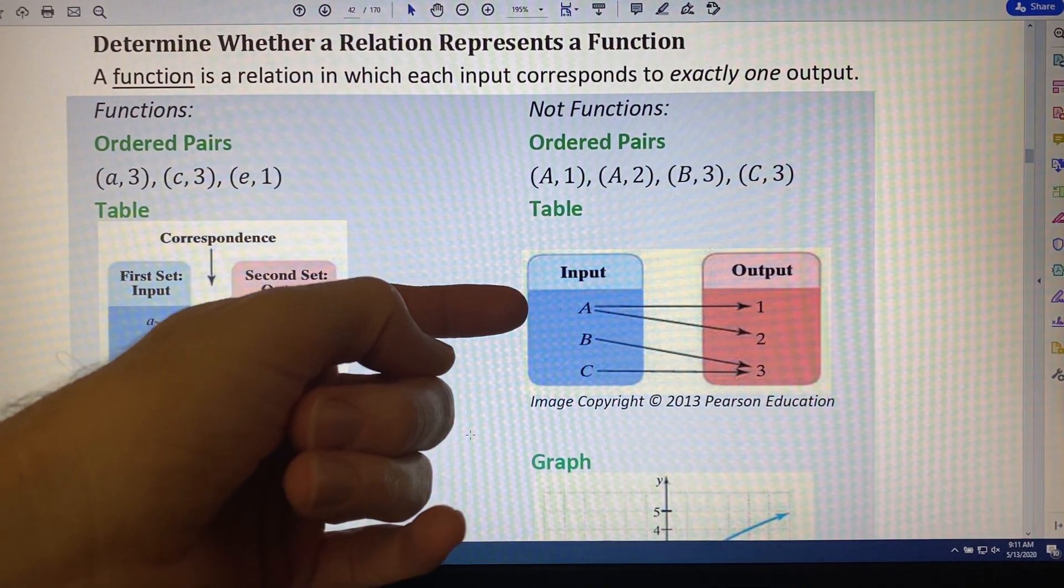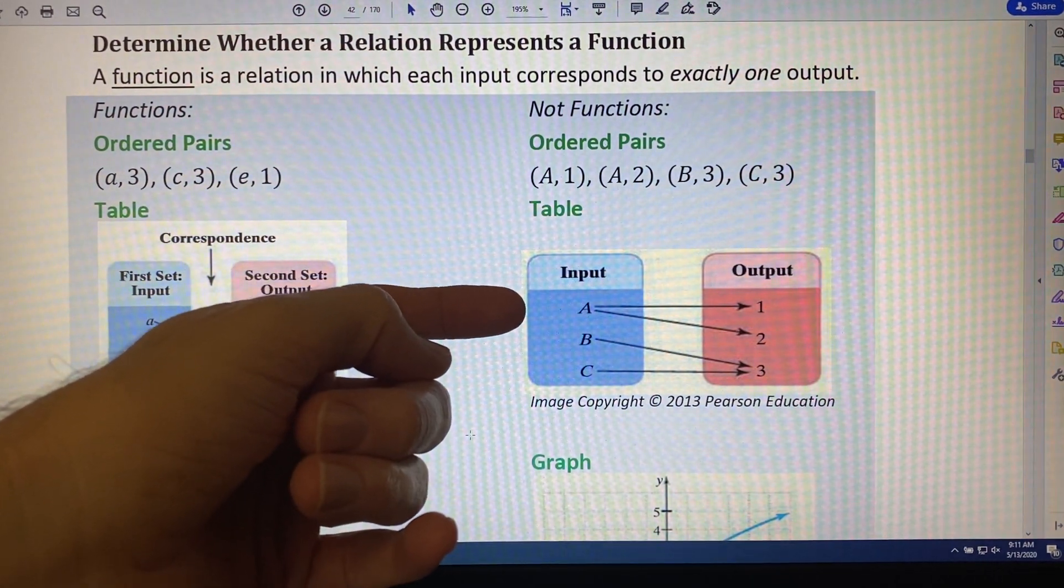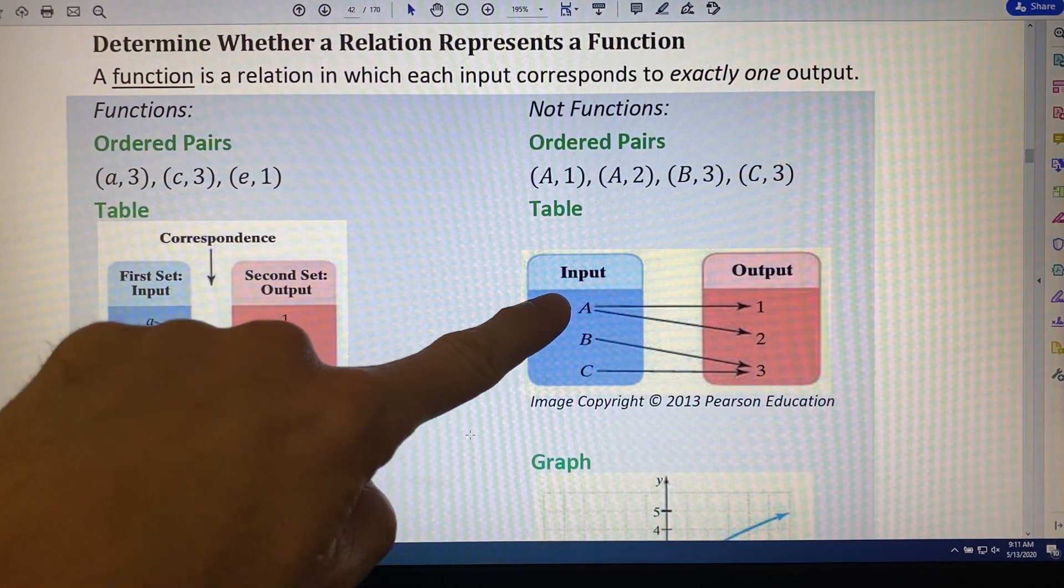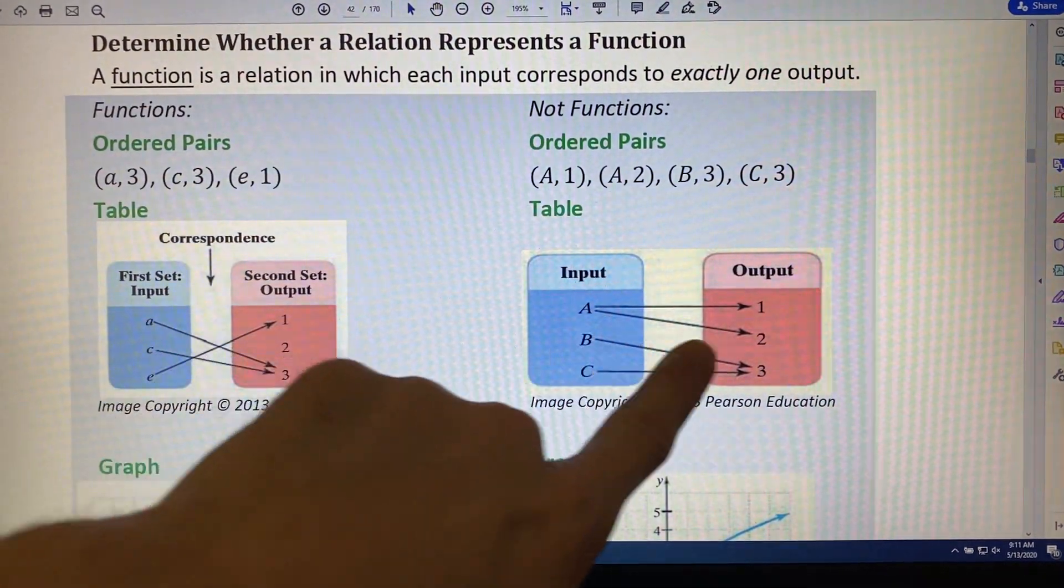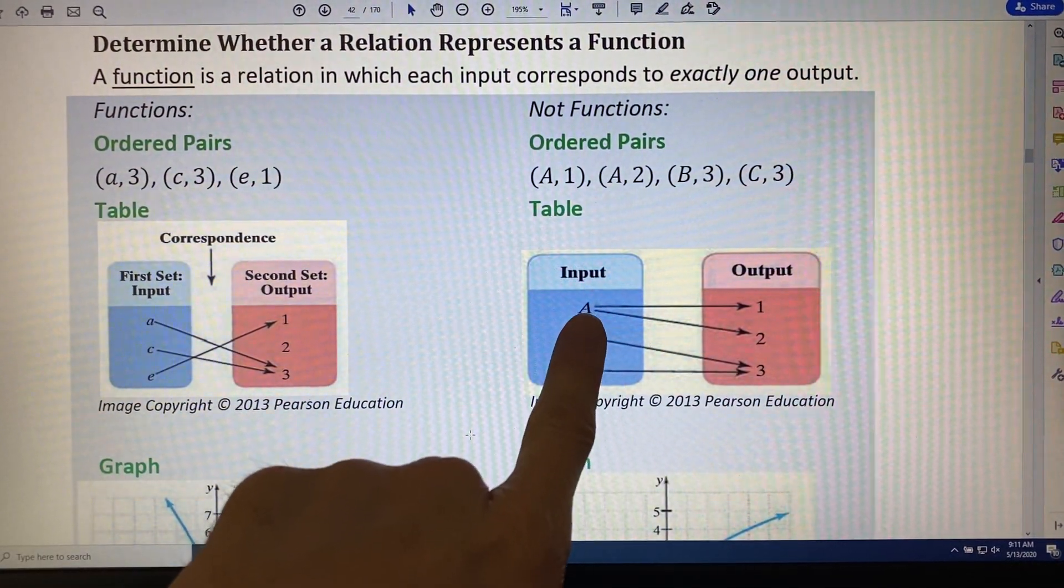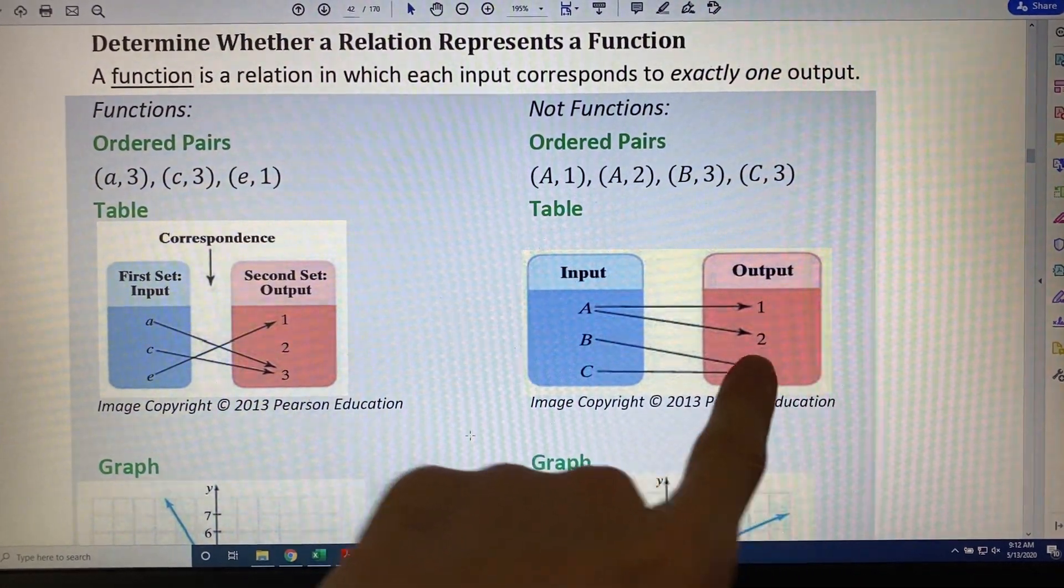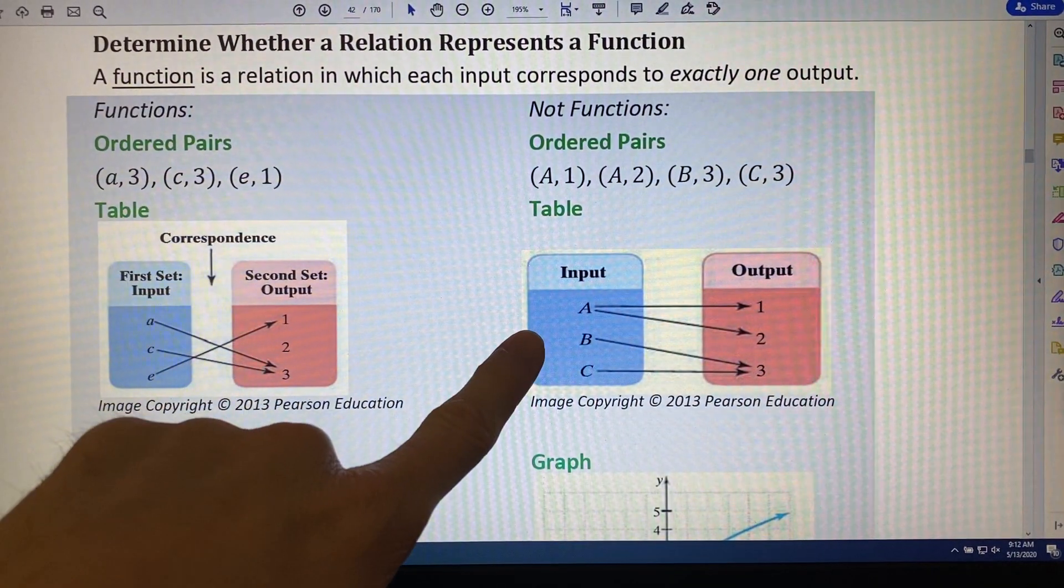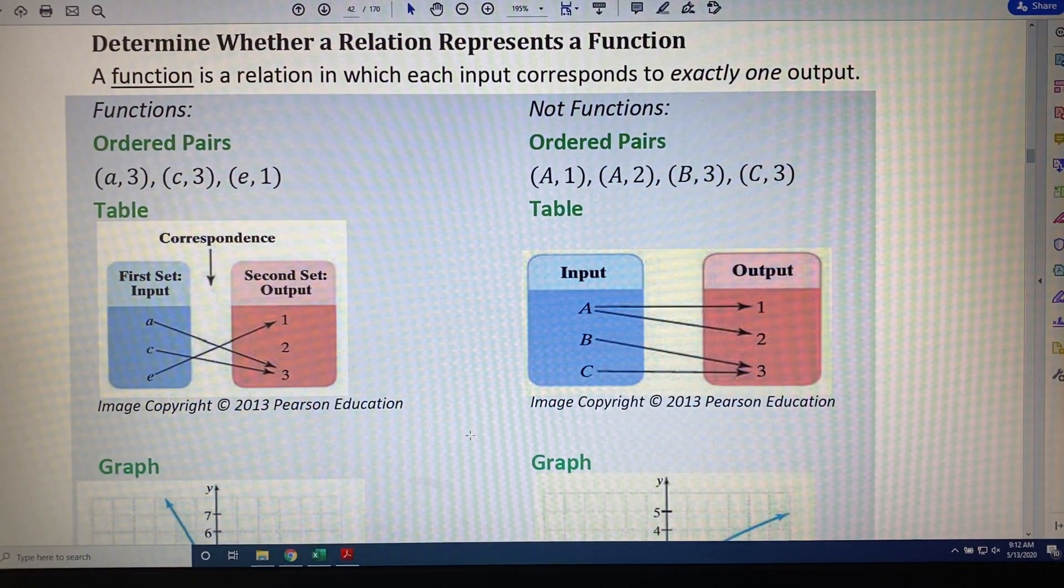We turn our attention now to the table, and we notice a similar observation. Capital A leads to 1, and also to 2. This is 1 input leading to 2 outputs. Therefore, it violates the definition, and this relation is not a function.